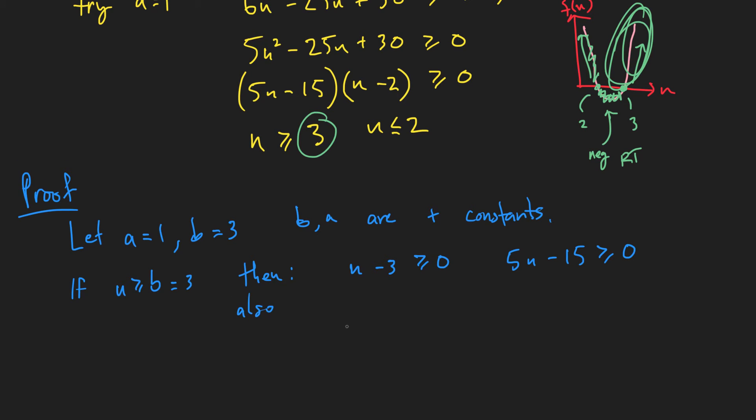Also, n minus 2 should also be greater than or equal to 0. So that's kind of how we found this one.